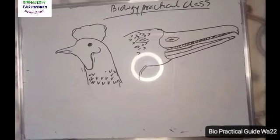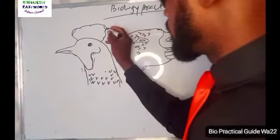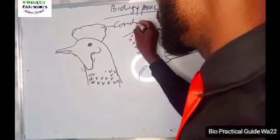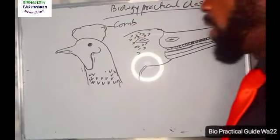Remember, your labelling lines should all be on one side. Buy your biology laboratory equipment from Samarjesty Easy World.